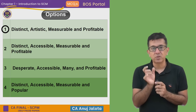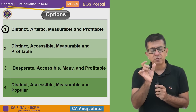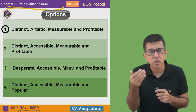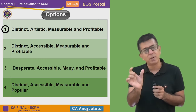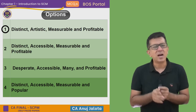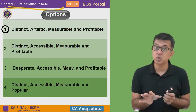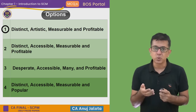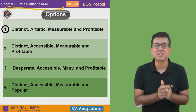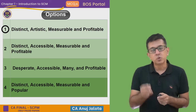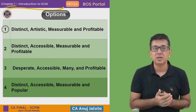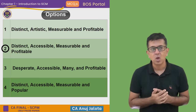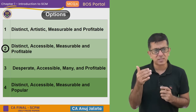Looking at option one — distinct, artistic, measurable, and profitable. Every market segment should be distinct. For example, insurance products are designed for customers aged 18 to 40, and then above 40 they change — so 18 to 40 is one segment, above 40 is another. Measurable: you should be able to measure how big the market is. Profitable: you only define something as a market segment if it is profitable. However, the word 'artistic' is nonsensical, so option one cannot be the answer.